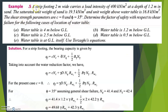For this strip footing, with cohesion equal to 0, the bearing capacity formula using water reduction factors RW1 and RW2 becomes: QF = C·Nc + γD·Nq·RW1 + 0.5·B·γ·Nγ·RW2. Here, sigma dash is γD. When considering water table effects, the equation uses reduction factors RW1 and RW2 on the surcharge and wedge terms respectively.